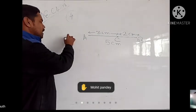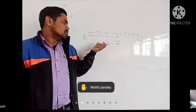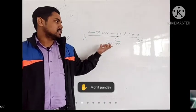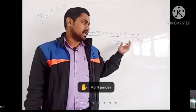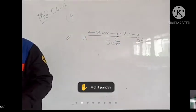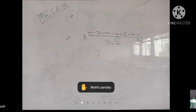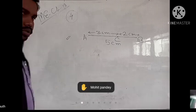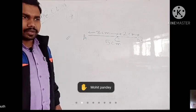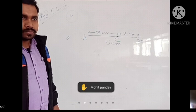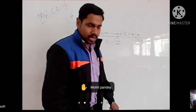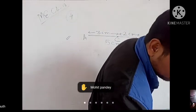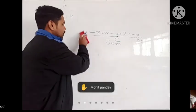Toh aapko yeh copy mein is tarah se banana hai — ek line segment draw karna hai jiska length 5 cm hoga, C point dena hai jiska length hoga 3 cm, and CB jo hai, woh 2 cm remaining bach jaayega. Aap measure karke bhi dekh sakte ho, otherwise you leave it as it is. So this is all about question number 4.